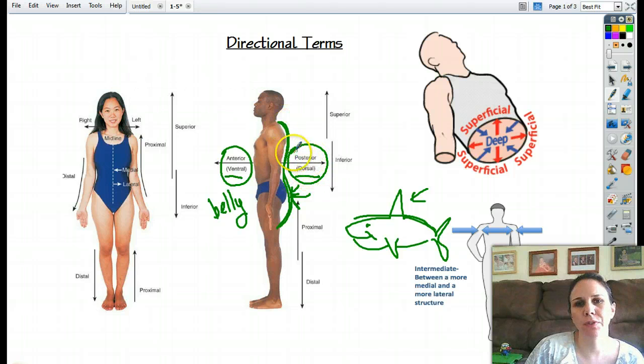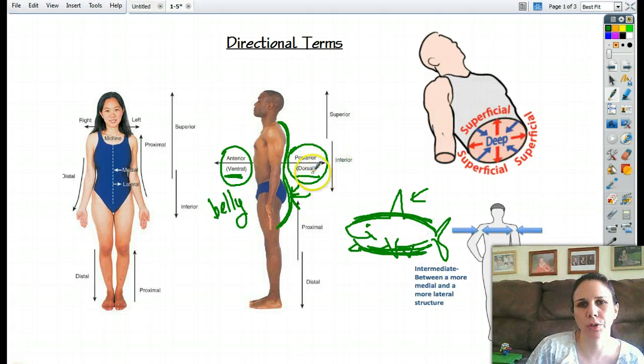So he has a dorsal fin or a posterior fin. Now if he had a fin grown out of his chin, well we'd call that his anterior chin. Or we could say that if it's on his belly, maybe it's his ventral fin because it's on his belly side. So belly side, ventral or anterior. Dorsal side, posterior or dorsal. Okay.